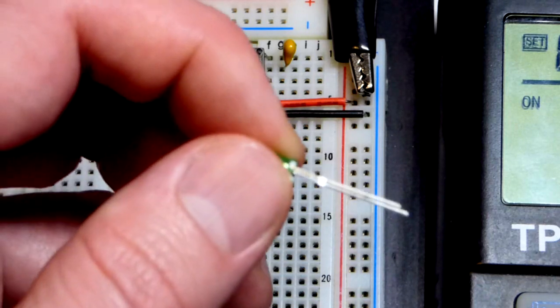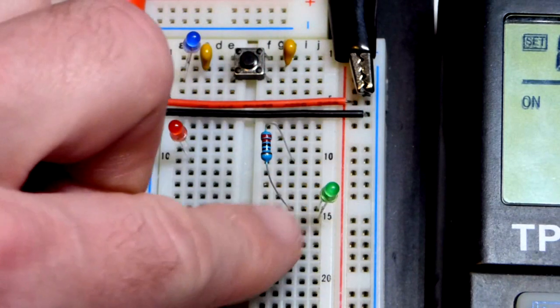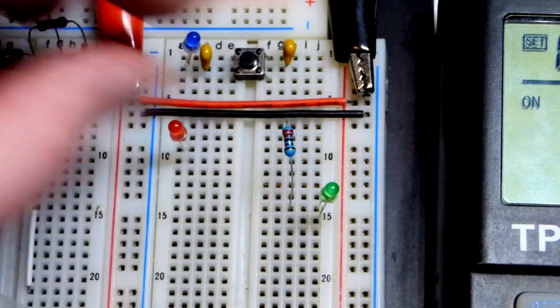Short lead also has a flat edge right there that you may have been able to see, but it's not terribly important. So in any case, we're going to put the long lead, the anode, to the resistor. That's the main takeaway.